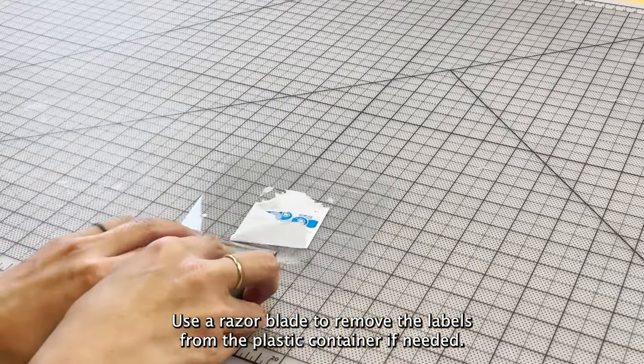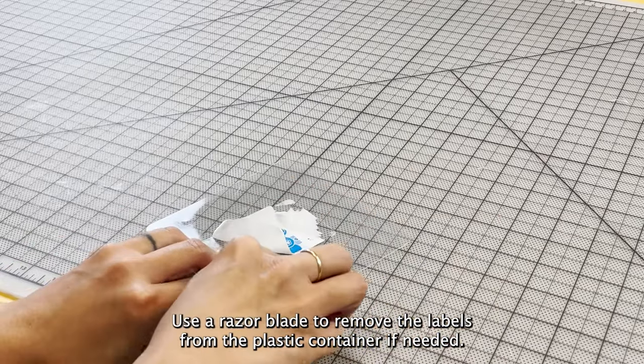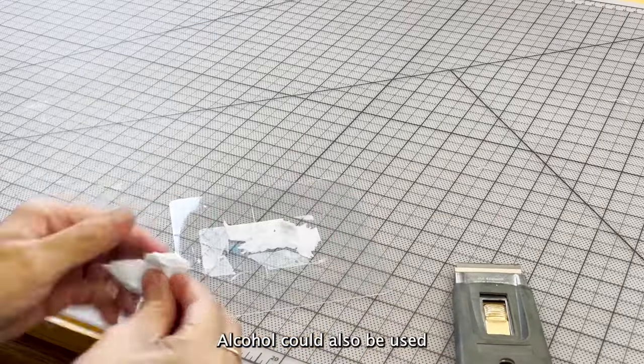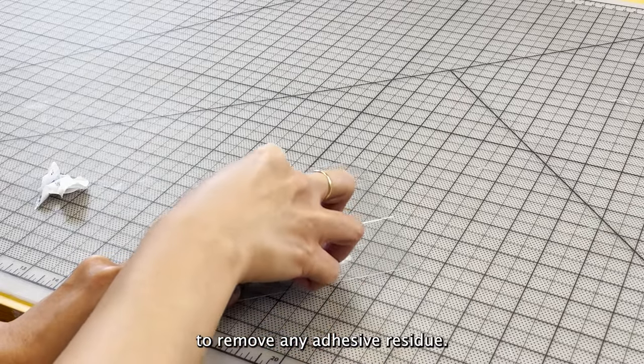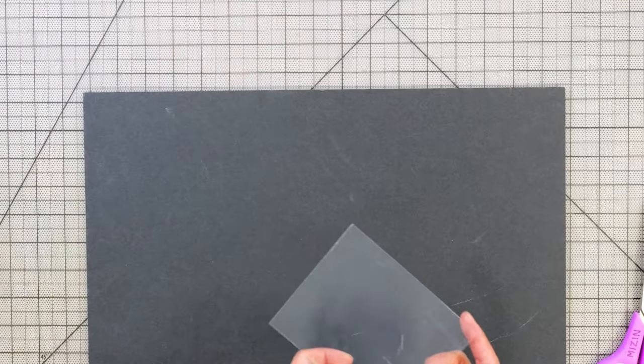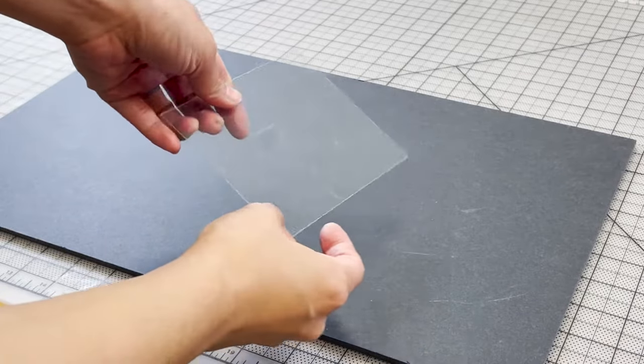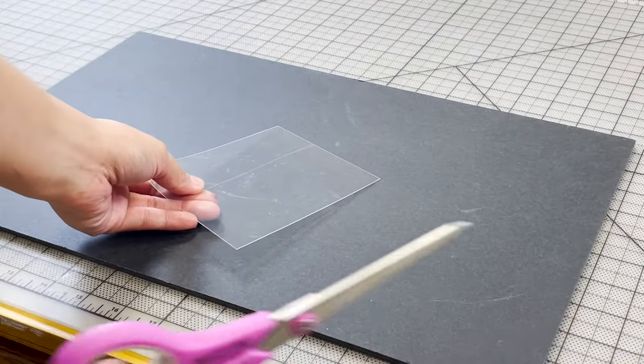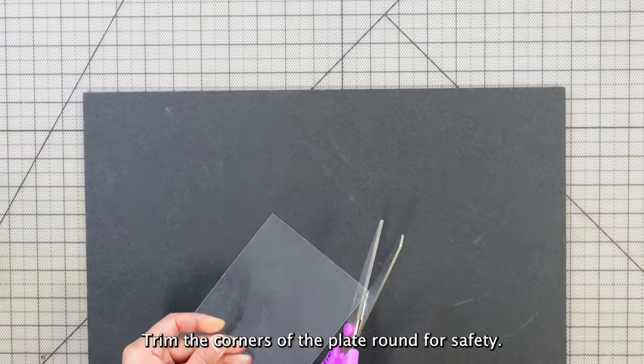Use a razor blade to remove the labels from the plastic container if needed. Alcohol could also be used to remove any adhesive residue. Trim the corners of the plate round for safety.